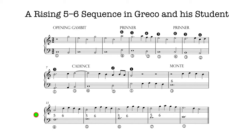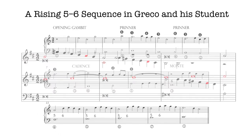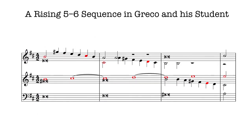That rising sequence could have been learned by Pergolese when he was a child and stuck with him through the rest of his professional life, which unfortunately was rather short — he died in his twenties. Here's the same rising 5-6 sequence in Pergolese's first mass setting.